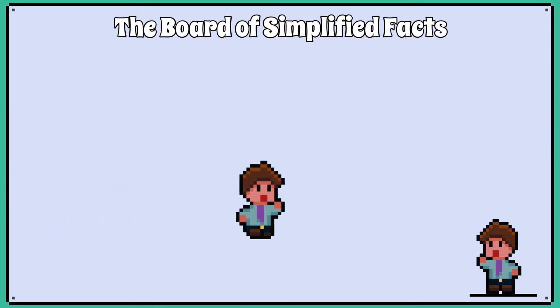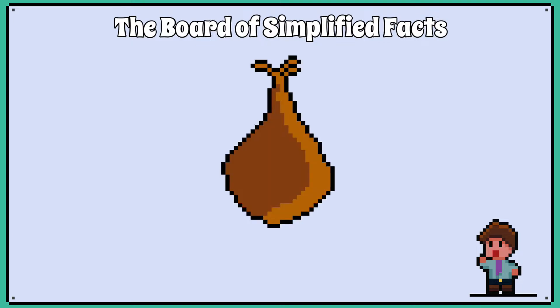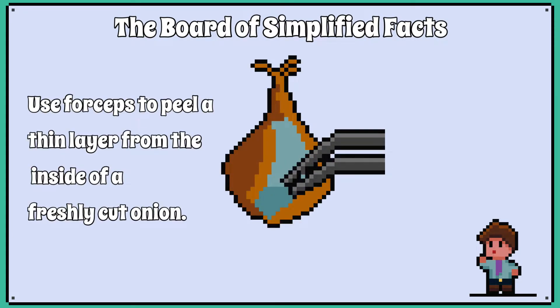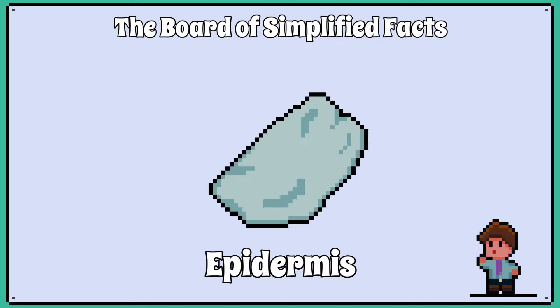For acquiring a plant cell sample we use onions. First we use forceps to peel a thin layer from the inside of a freshly cut onion. A scientific phrase for this thin onion skin layer is called the epidermis.